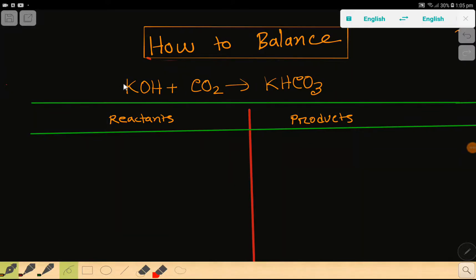Hey, welcome to the channel. Today we're going to balance this reaction: potassium hydroxide plus carbon dioxide yields potassium bicarbonate or hydrogen carbonate. To balance this reaction, first we make a table like this. This is the reactant side, this is the product side.